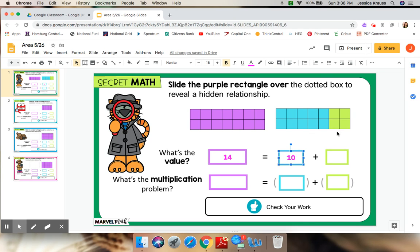Now we have the green left. Two, four. The value of the green is four, and I know that ten plus four is fourteen.